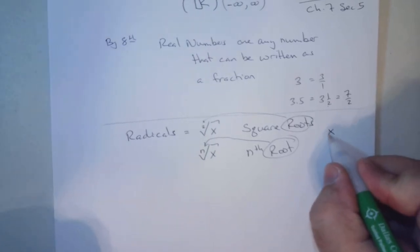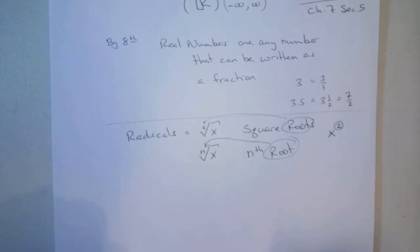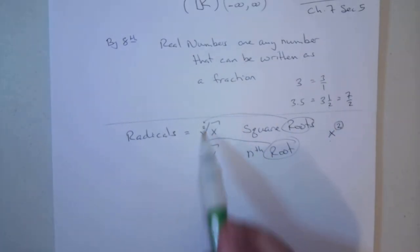Then we'll say, what is that? How do you read that? x squared. Whenever you say squared, it means a 2. So this is square root.